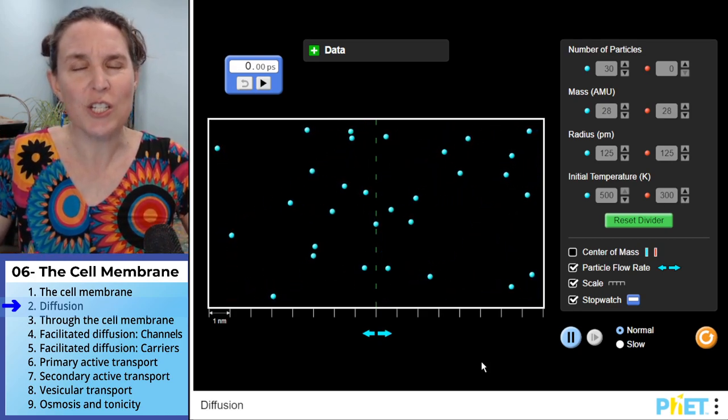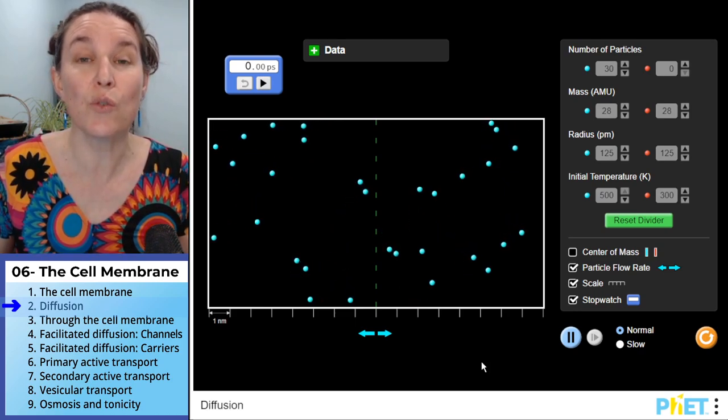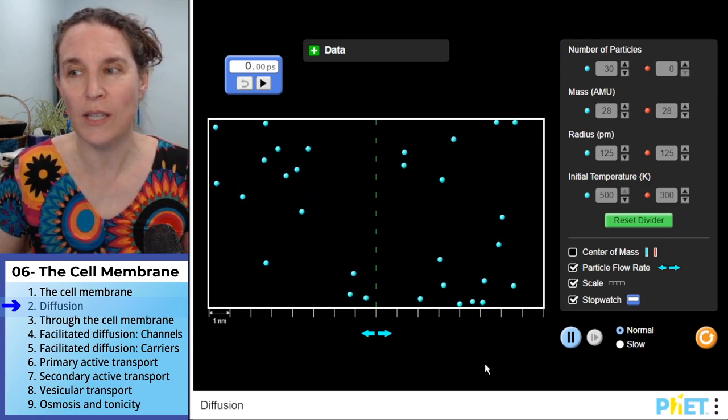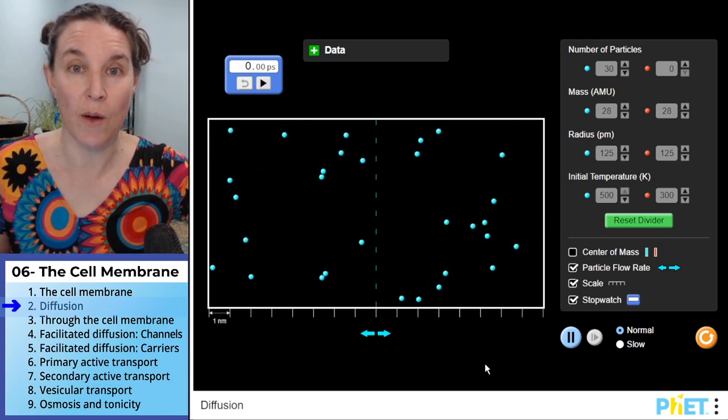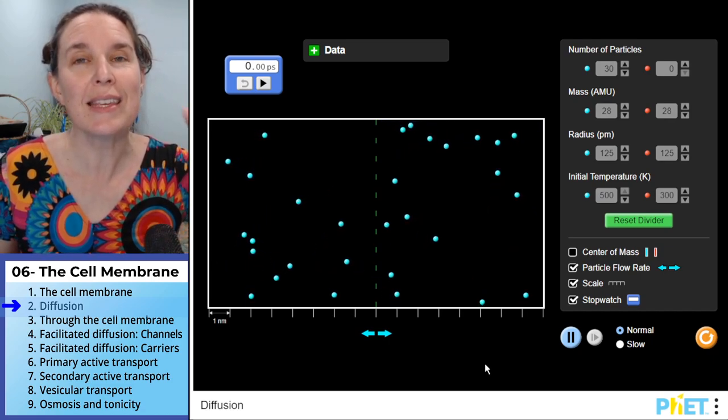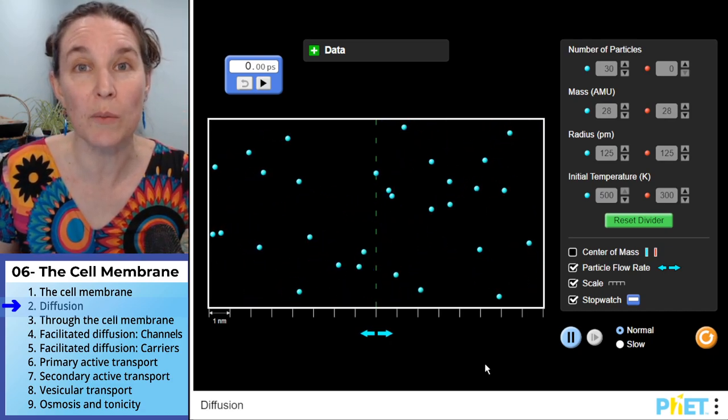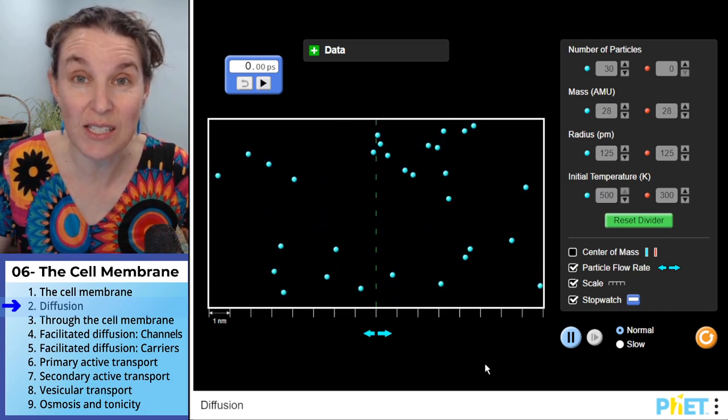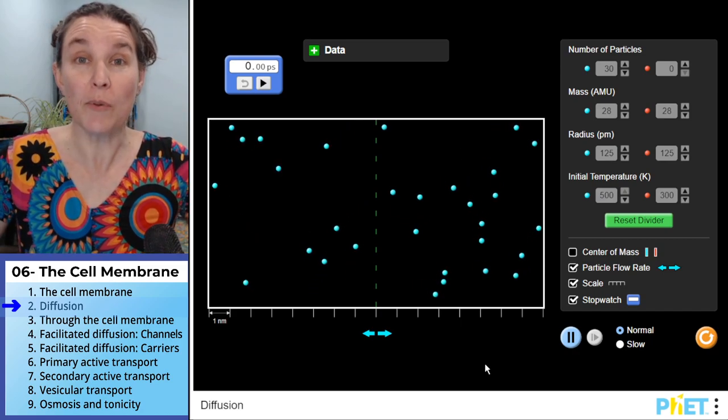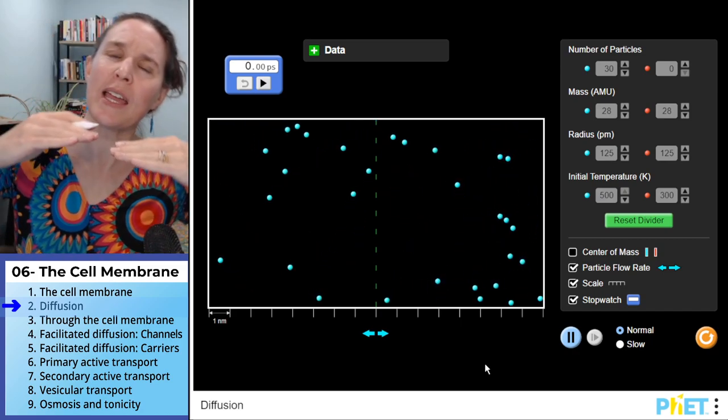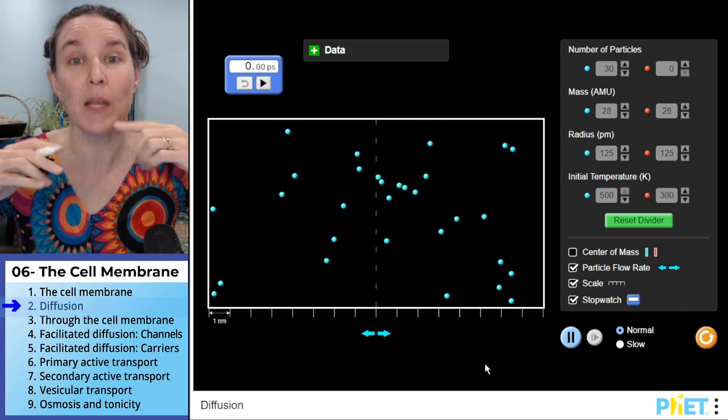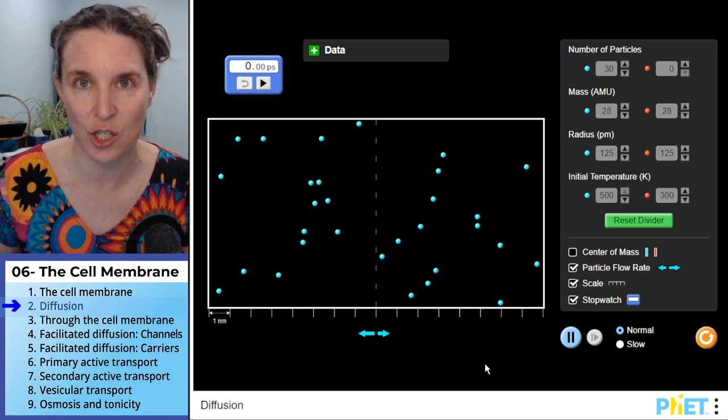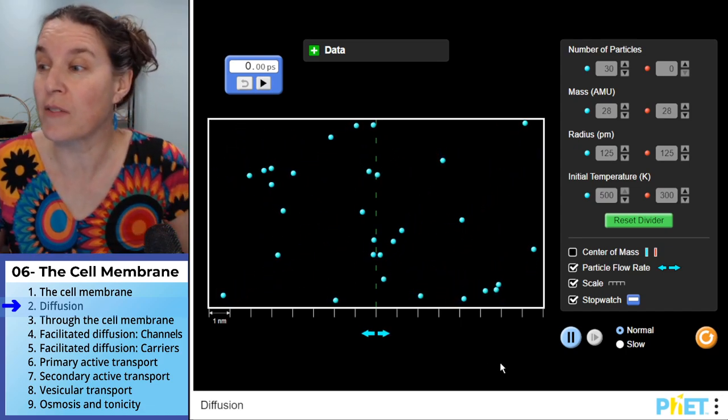Once the concentrations are essentially equal on both sides, do the particles stop moving? No. This is what's called, I want you to write this down, even though I am not going to write it down because I'm not going to go back to our notes. This is called dynamic equilibrium. Dynamic equilibrium is, since particles are constantly moving, dynamic equilibrium is where we look like and feel like we're staying the same, but things are still moving back and forth. There's just not a net change. This is a really good example of dynamic equilibrium.